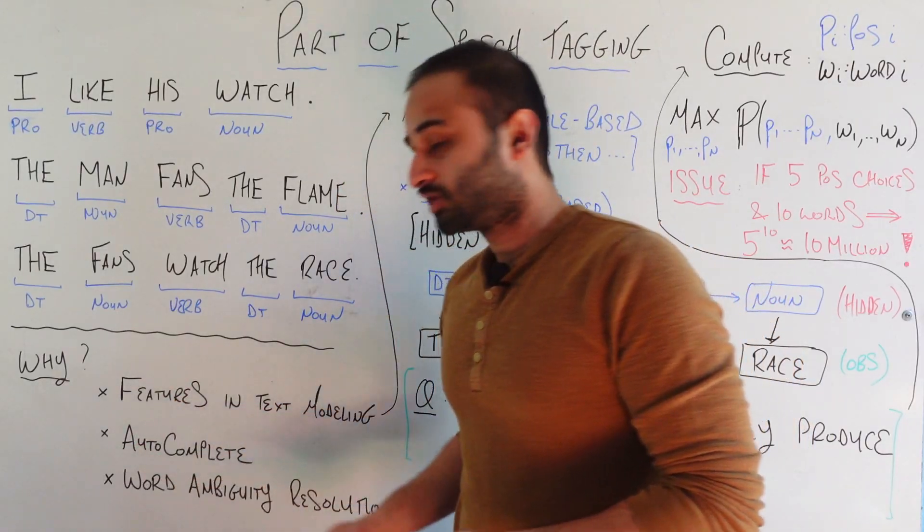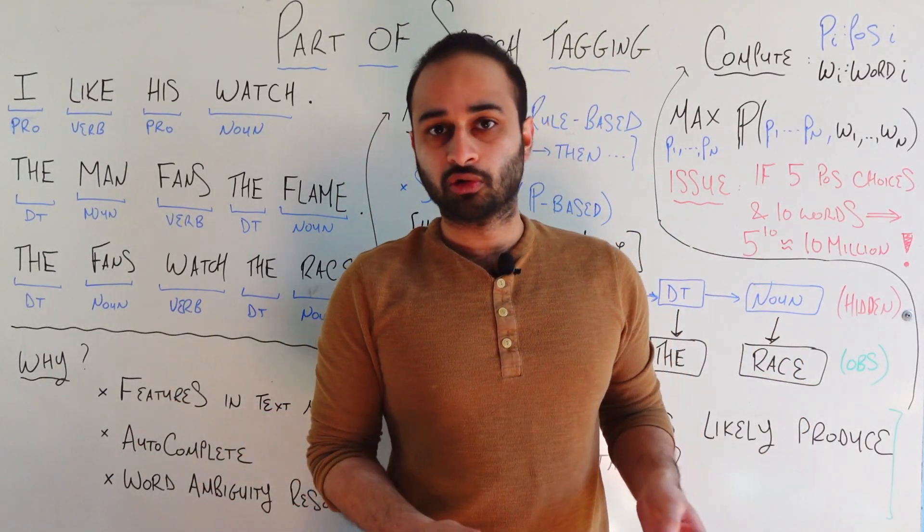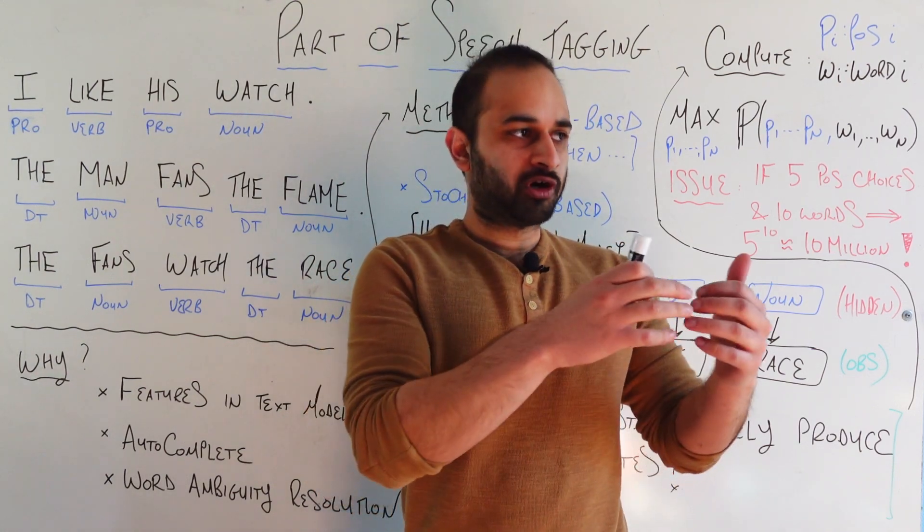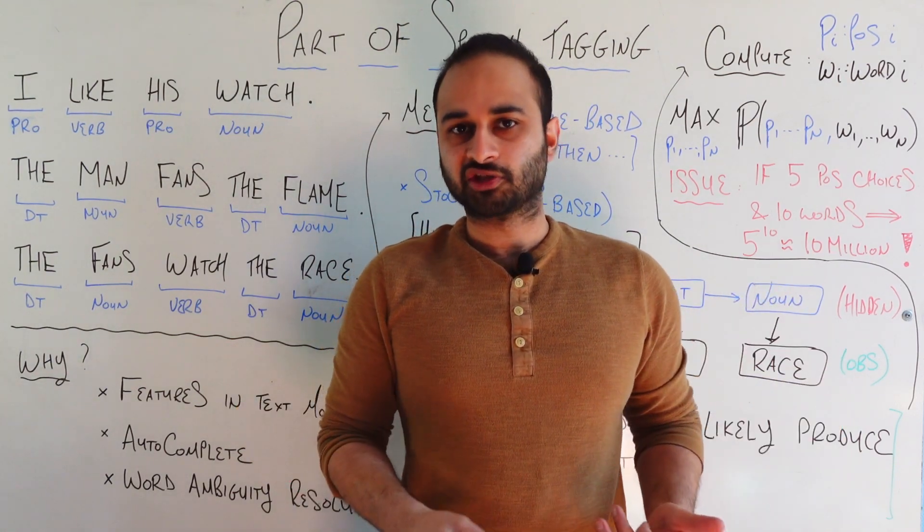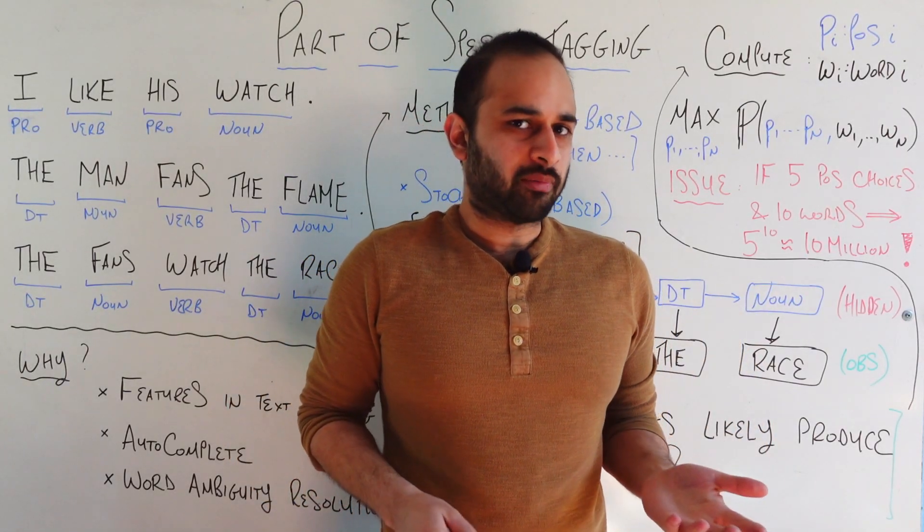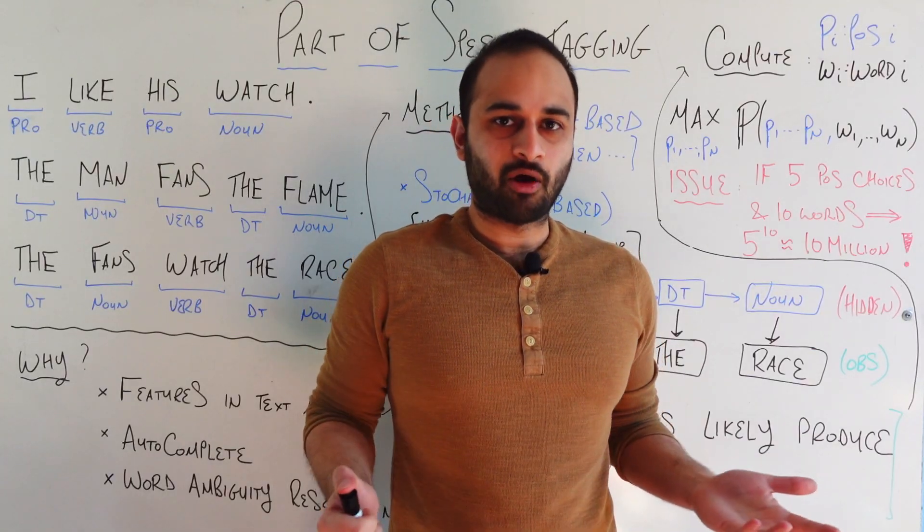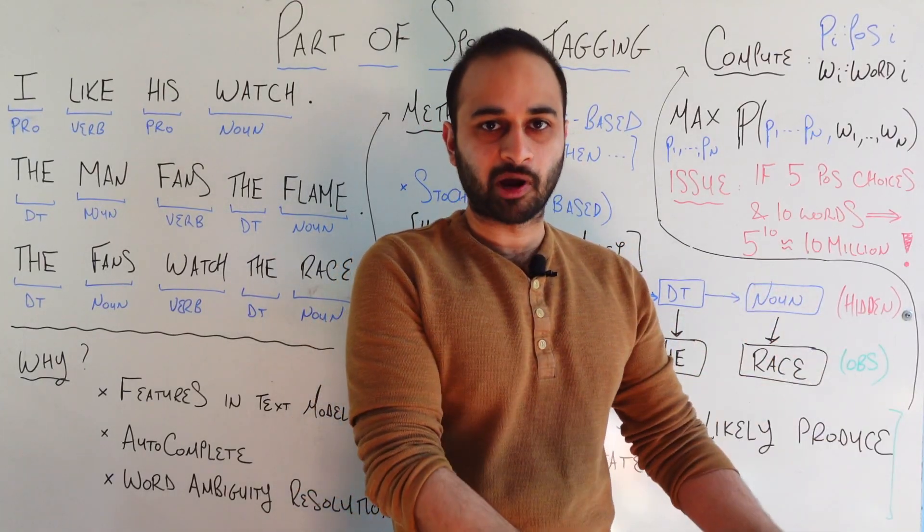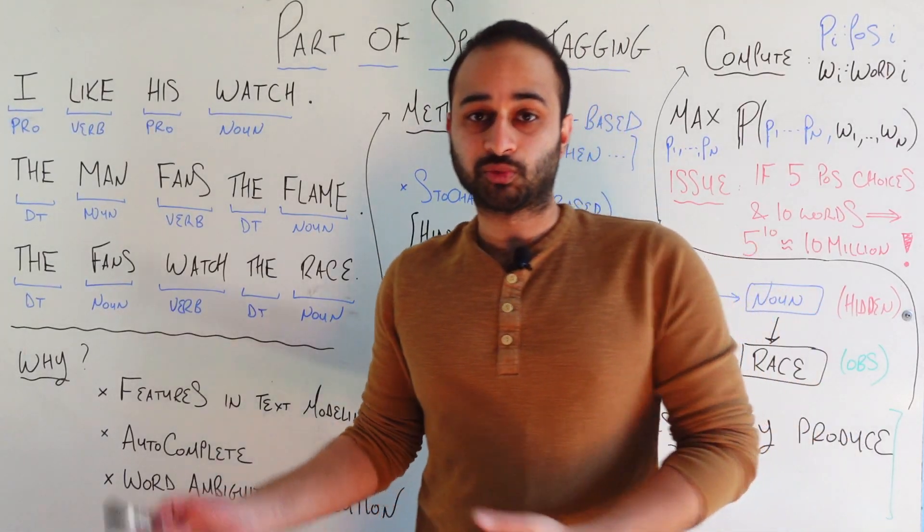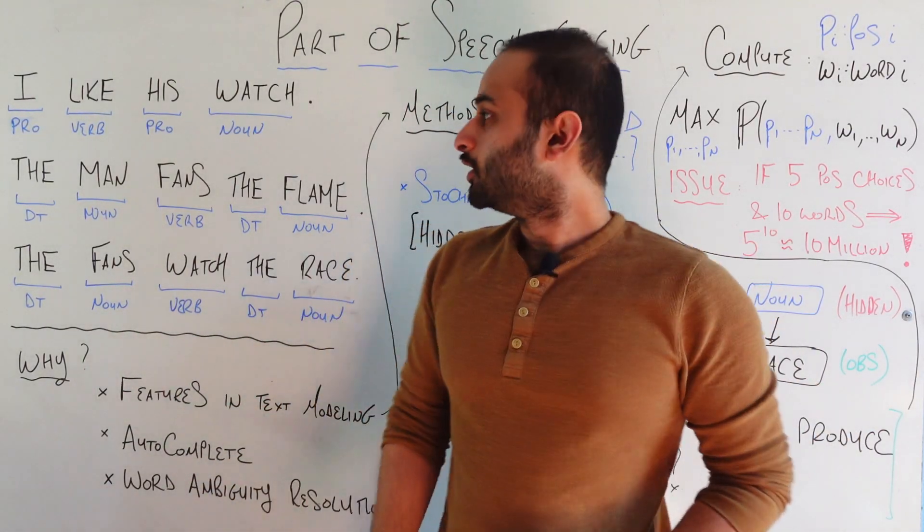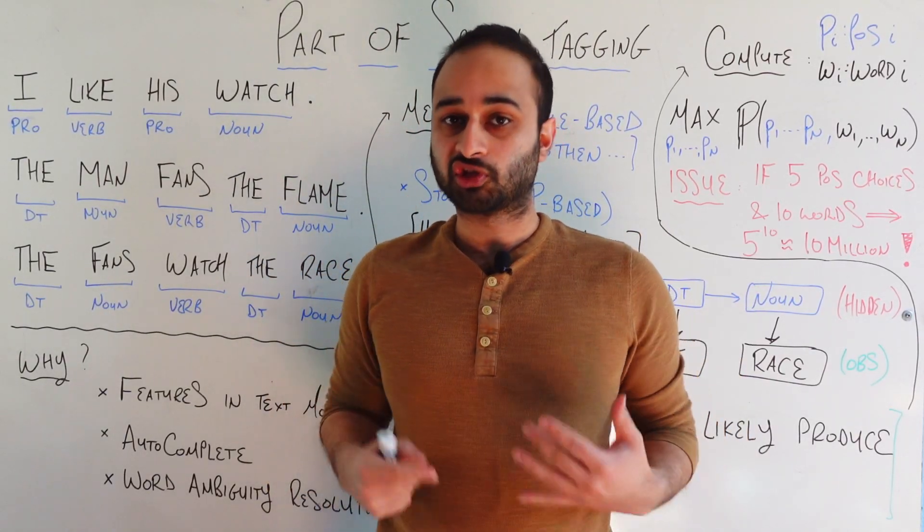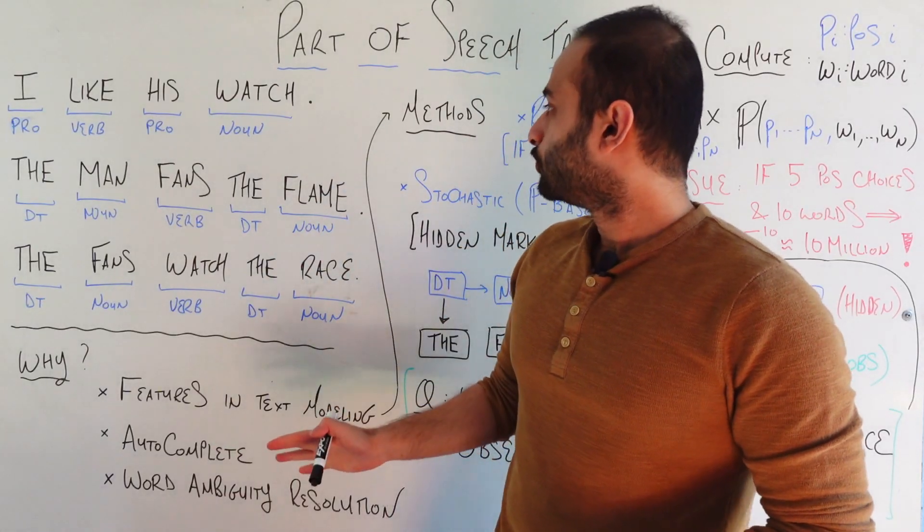We might also want to use it for something interesting called autocomplete. So when you're going in Google, and you type something like, I want to, how does it figure out what's the next word? Part of that is going to be part of speech tagging. Because we know that I want to, and then the word pizza probably wouldn't come after that. Because pizza's a noun, and we're probably looking for a verb of some kind. So that's going to be important. And also word ambiguity resolution, as we talked about here. We want to be able to take a word like watch and figure out if we're talking about it as a noun or as a verb. And so on.